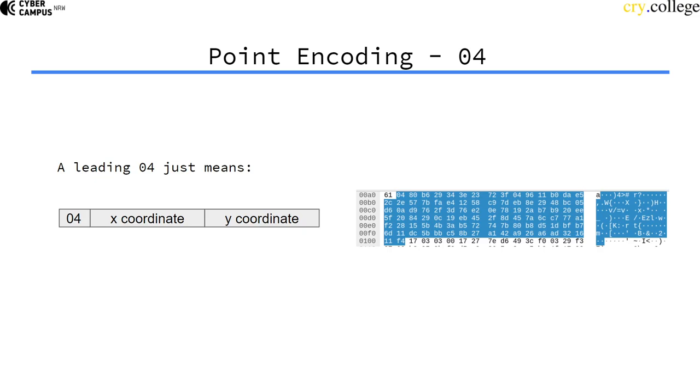04 means that the x and y coordinates are included, so the first bytes are the x coordinate and then the other bytes are the y coordinate.